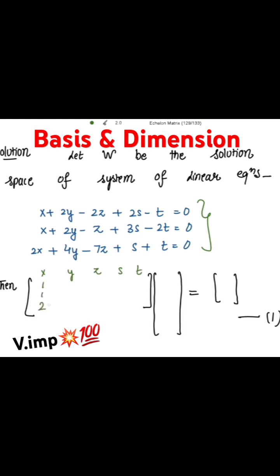So this is 1, 1, 2, then 2, 2, 4, then negative 2, negative 1, negative 7, and then 2, 3, 1, and minus 1, minus 2, 1. Writing here x, y, z, s, t, and here 0, 0, 0.